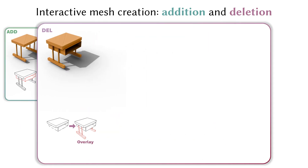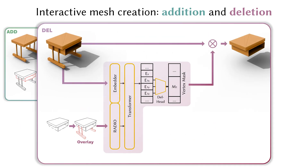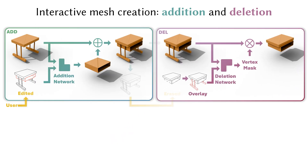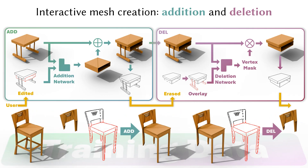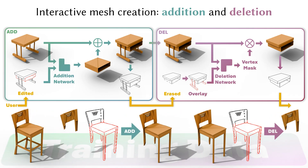For mesh deletion, we first overlay the user input with the original sketch, and then use a transformer backbone to predict whether each vertex in the mesh should be removed. Combining mesh deletion and mesh addition enables an iterative editing process, as well as easy supervision for both tasks by simply randomly sampling regions of training meshes.